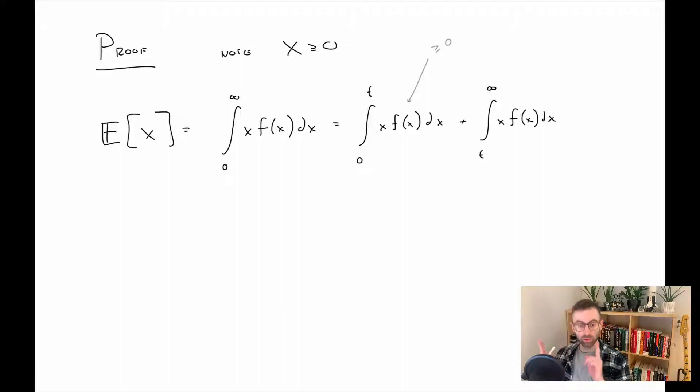So next step then, those two integrals are bounded below by the second one, because that first integral is non-negative. The next thing we're going to do is note that t is the smallest possible value that x can take in this integral. So we can pull t outside the integral and create a new integral that is smaller.